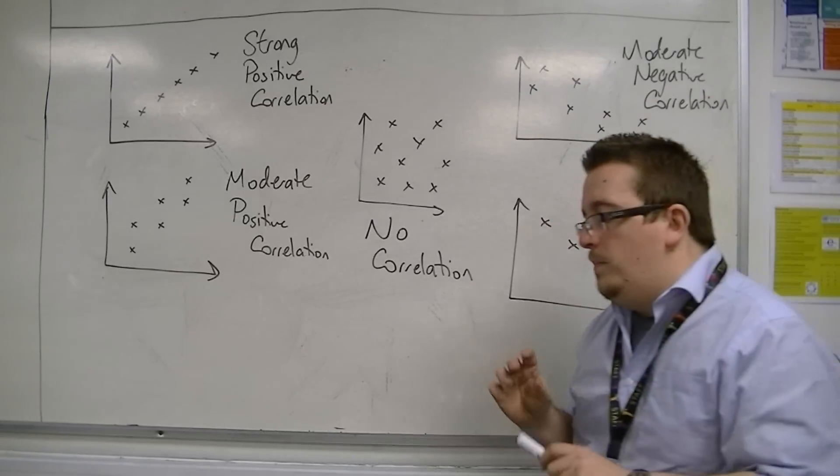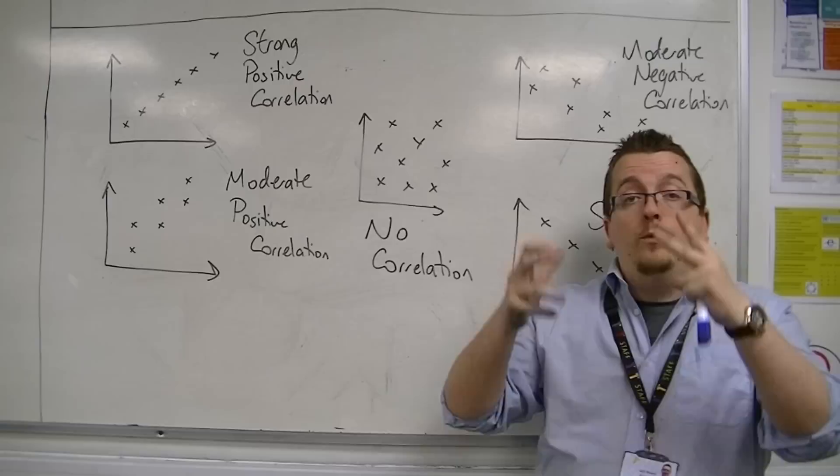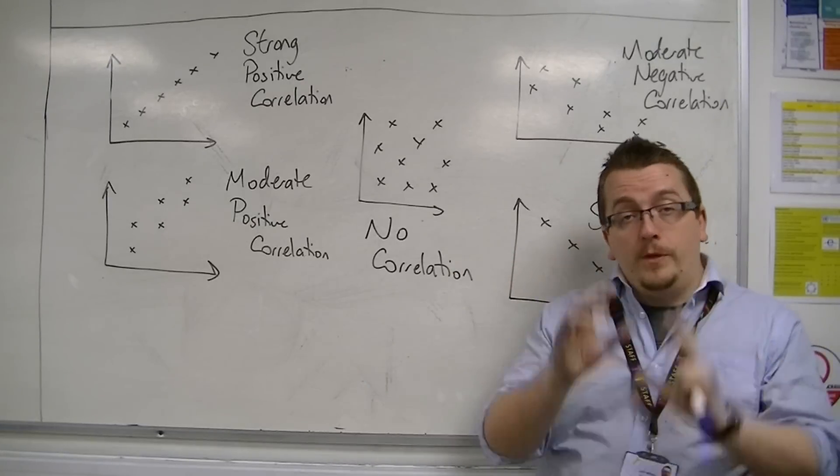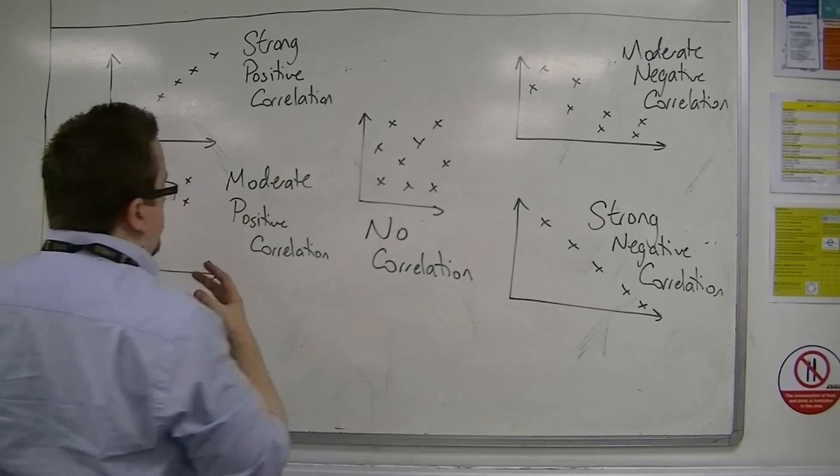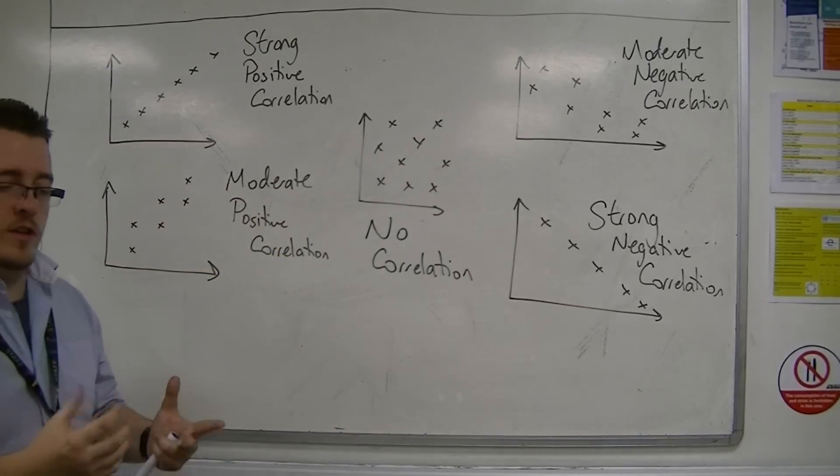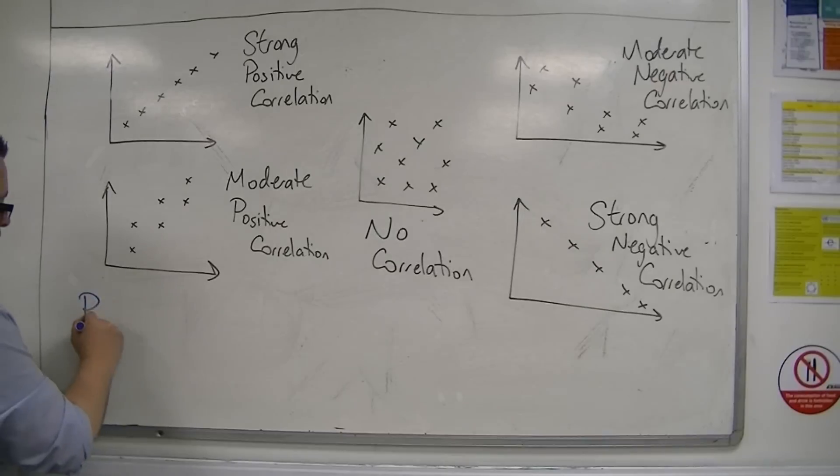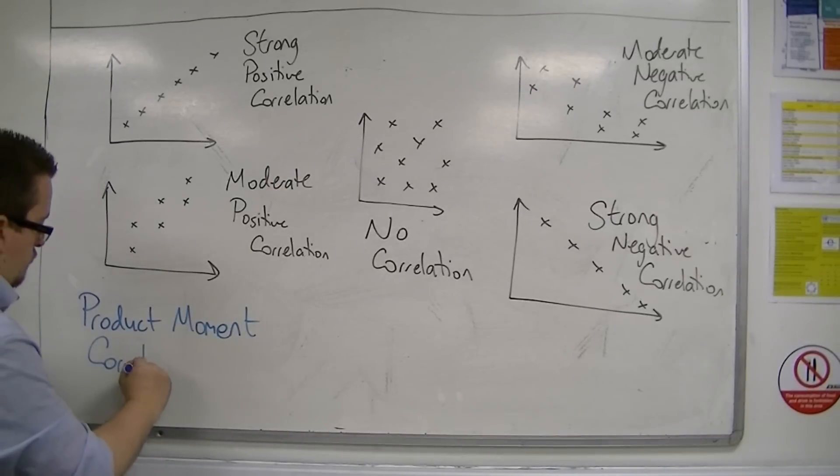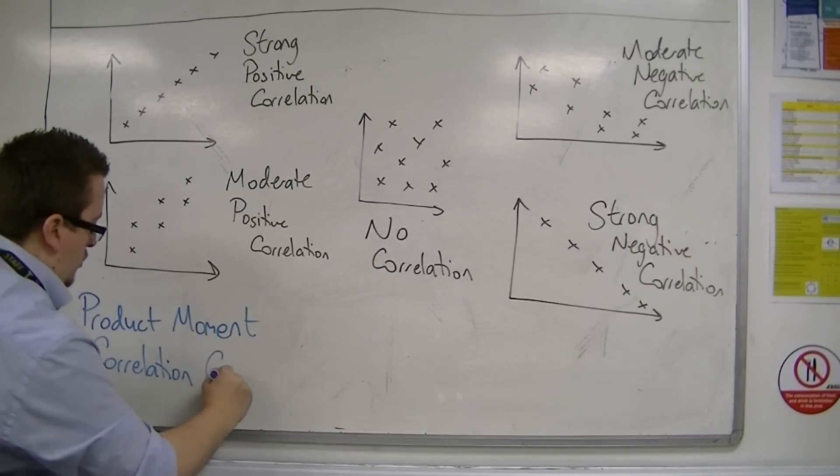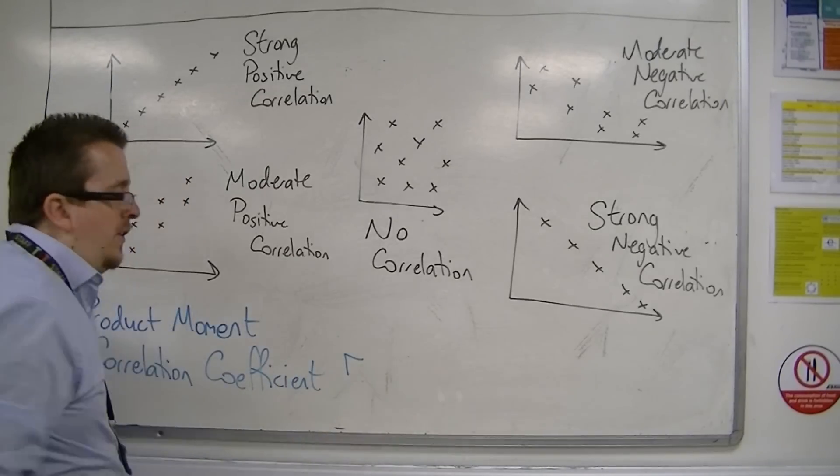It would be very useful in order to compare correlations if we had a numerical value to attribute to each of these. That is where something called the product-moment-correlation coefficient comes in. It's got a long title, the product-moment-correlation-coefficient, and it's usually labelled as R.